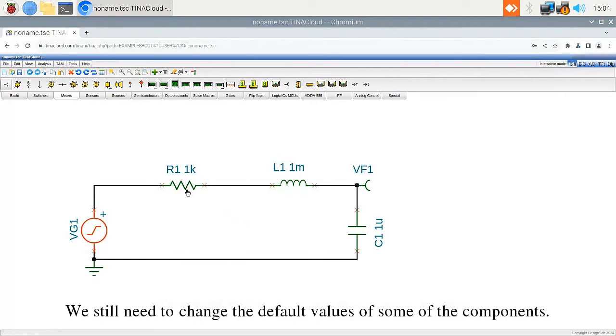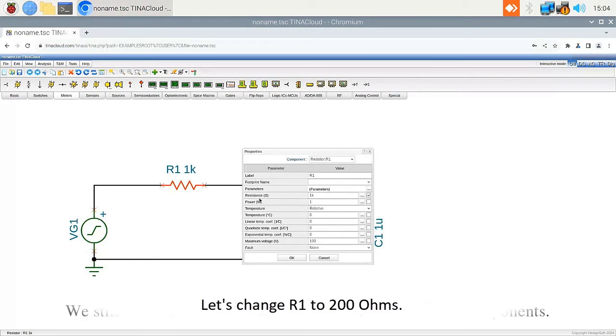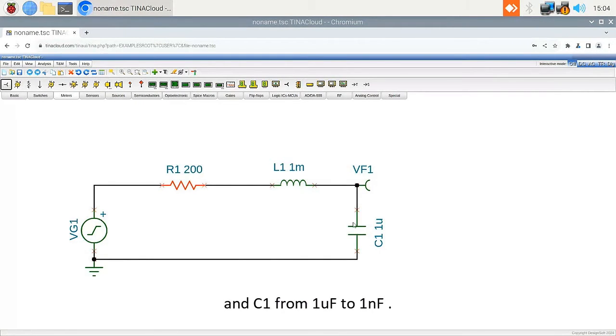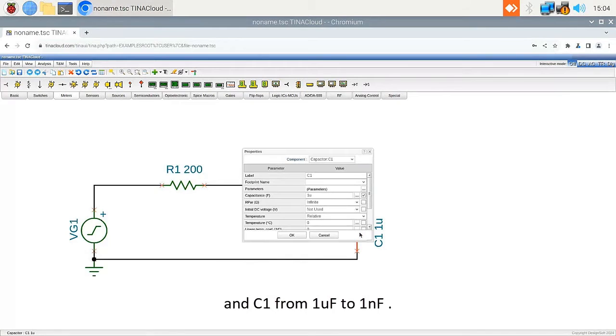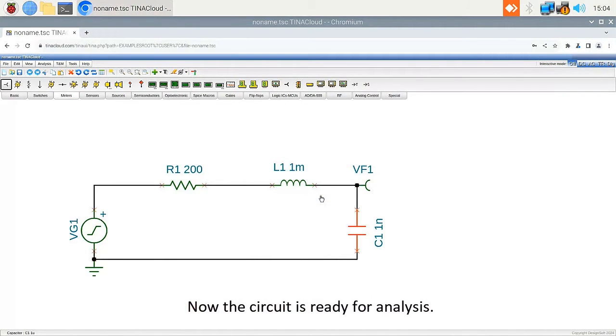We still need to change the default values of some of the components. Let's change R1 to 200 ohms. And C1 from 1 microfarad to 1 nanofarad. Note that you should just enter 1N for 1 nanofarad. Now the circuit is ready for analysis.